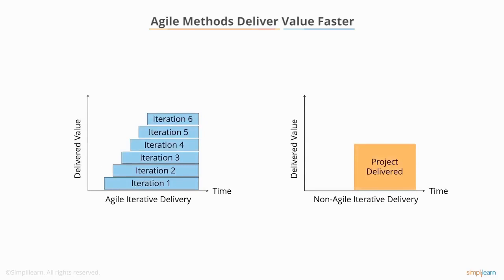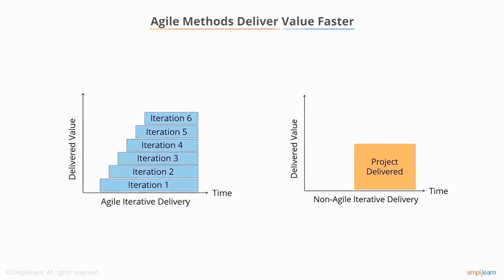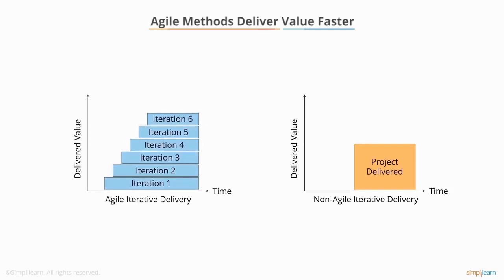In the traditional approach, shown on the right, the customer has to wait until the end of the project for the delivery of working software and the realization of return on investment. Scrum delivers value or working software at the end of each sprint. Looking at the chart on the left, you can see how value is delivered clearly and incrementally from the very beginning of the project.